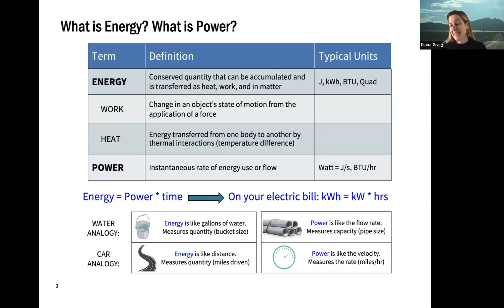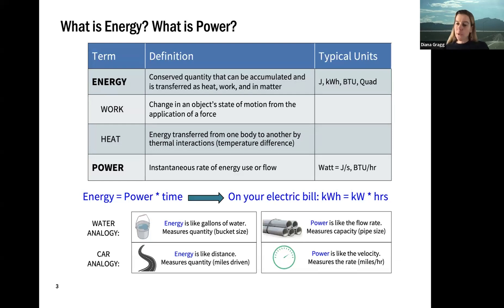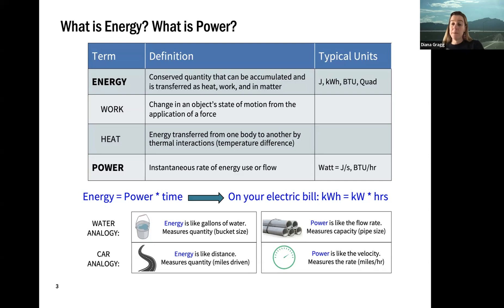One of the things that gets messed up a lot in media is the difference between energy and power. Those are two different things. Energy is really a quantity — it's the amount — and power is more like the flow rate, the instantaneous use of that energy. Energy is just power times time. What you're paying for on your electric bill, you get your electric bill in kilowatt hours — that's just power times time, your kilowatts times the number of hours you use it. You're paying for a quantity.